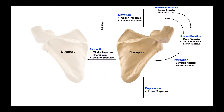We have two scapulae — a left one and a right one. Looking at this posterior view, the spine of the scapula is only visible on the posterior aspect, which gives away this view. Up here is the supraspinous fossa, down here is the larger infraspinous fossa, and this protrusion is the acromial process or acromion. This small concavity on the lateral aspect is the glenoid fossa, which makes up one half of the shoulder joint. The other half is made up by the head of the humerus, which sits right in the glenoid fossa.